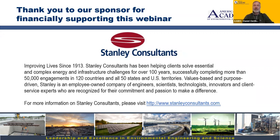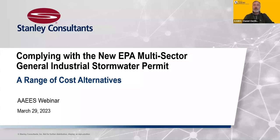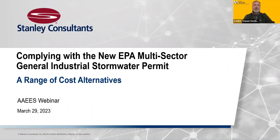Today, we'll be hearing about complying with new EPA multi-sector general industrial stormwater permits. We'll be looking at a range of cost alternatives. Before I introduce our speakers, I'd like to remind colleagues that our webinars are meant to be interactive. Throughout the webinar, please post your questions in the Q&A bar. I'll be reading these in real time, combining them together, and at the end of the webinar I'll moderate a discussion. So do please put your questions throughout the entire webinar — don't just hold them to the end.